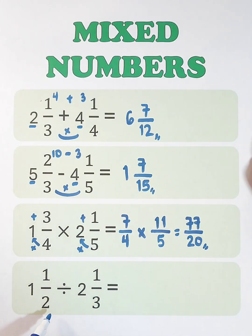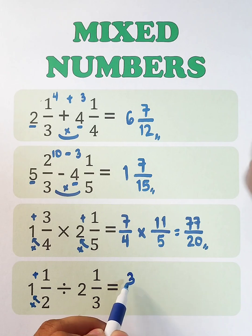And now, let us divide these two mixed numbers. 1 and 1 half divided by 2 and 1 third. Convert these two mixed numbers into improper fractions. We have 2 times 1, which is 2, plus 1, that is 3. Then copy your original denominator, 2.